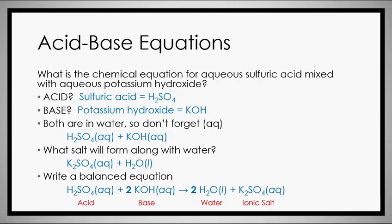A quick note: if you look at the acid, there are two H+ ions. To make a water molecule you need one H+ and one OH-, so because there are two H+ ions, you need two complete KOH units to supply two OH- ions. This ensures you form real water molecules and not something odd like H3O.